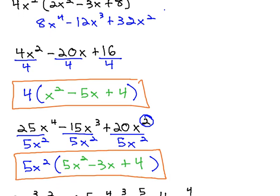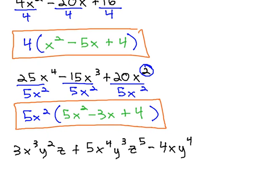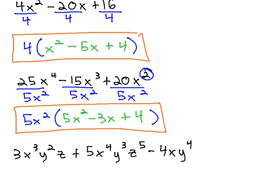Let's try one more example that might be a little more involved with this idea of factoring out common factors. We can look at what we can divide all three of these terms by in 3x³y²z + 5x⁴y³z⁵ - 4xy⁴.